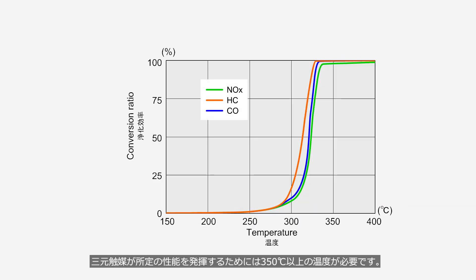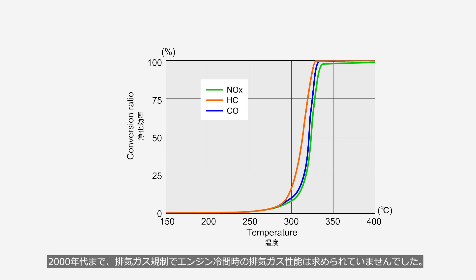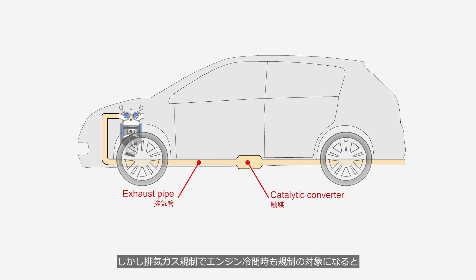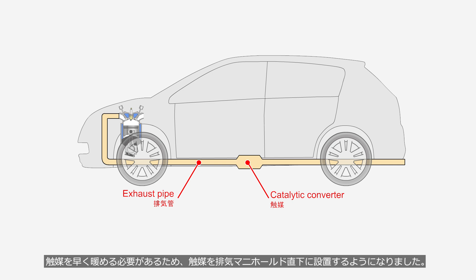Three-way catalytic converters require a temperature of at least 350 degrees Celsius to achieve their designated performance. Until the 2000s, exhaust gas regulations did not require emissions performance during cold starts. Since there was no need to consider warming up the catalytic converter, it was installed under the floor, away from the engine. However, when emissions regulations began to cover cold start conditions as well, it became necessary to warm up the catalytic converter quickly. As a result, it started being installed directly below the exhaust manifold.